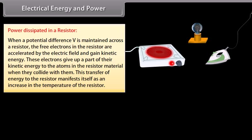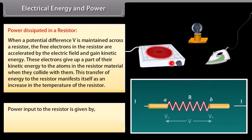When a potential difference V is maintained across a resistor, free electrons are accelerated by the electric field and gain kinetic energy. They give up part of this kinetic energy to atoms through collisions, manifesting as an increase in the resistor's temperature. Power input to the resistor is P = VI = I²R = V²/R.